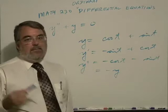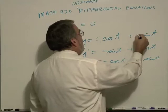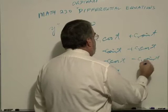Well, now it gets a little better. I can also multiply by constants here, c1, c2, c1, c2, and it's still a solution to that problem.